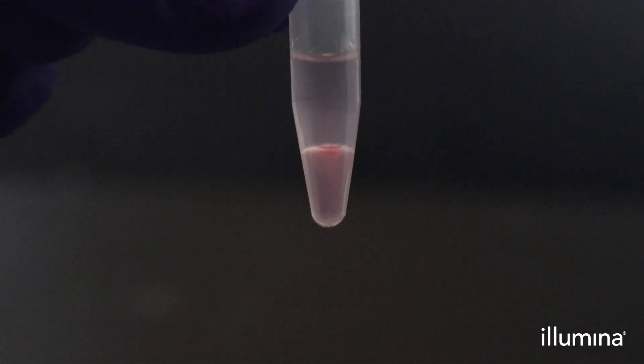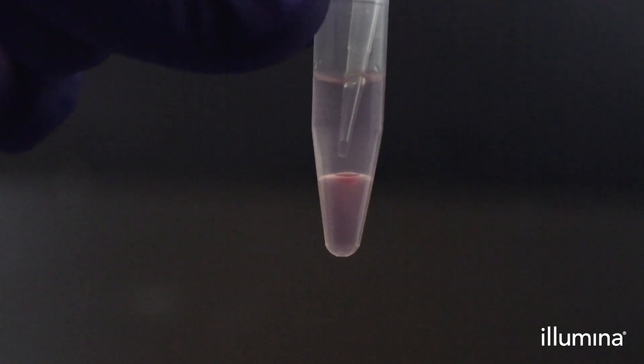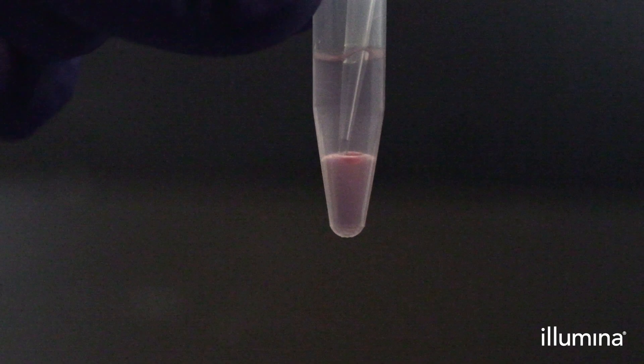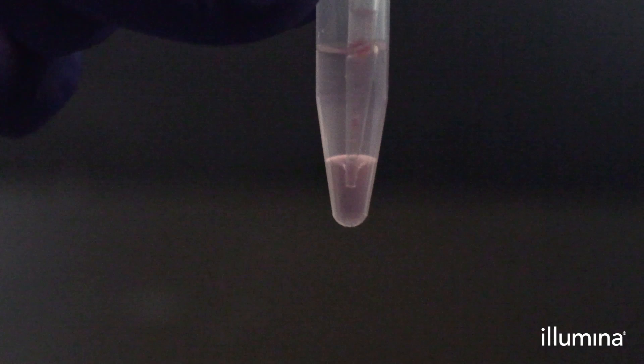After spinning down your samples in a benchtop minifuge for 5 to 10 seconds, aspirate all of the bottom pink waste phase. With a pipette set to 70 microliters, begin with aspirating out the bright red dot at the interface before continuing with aspirating the rest of the waste.